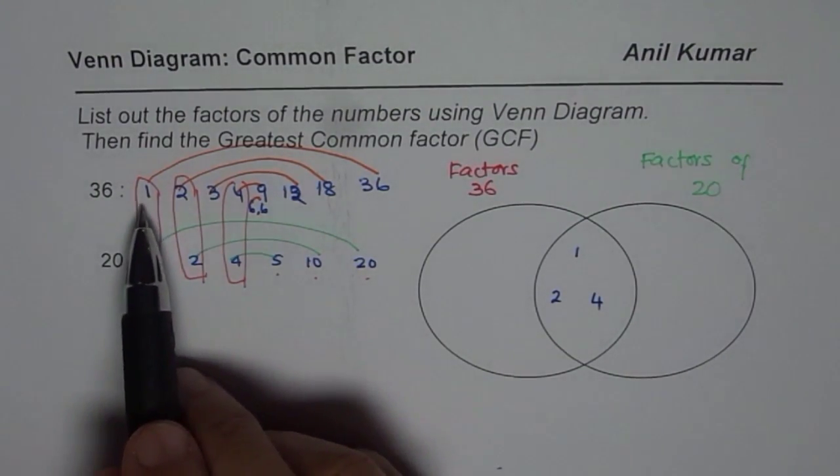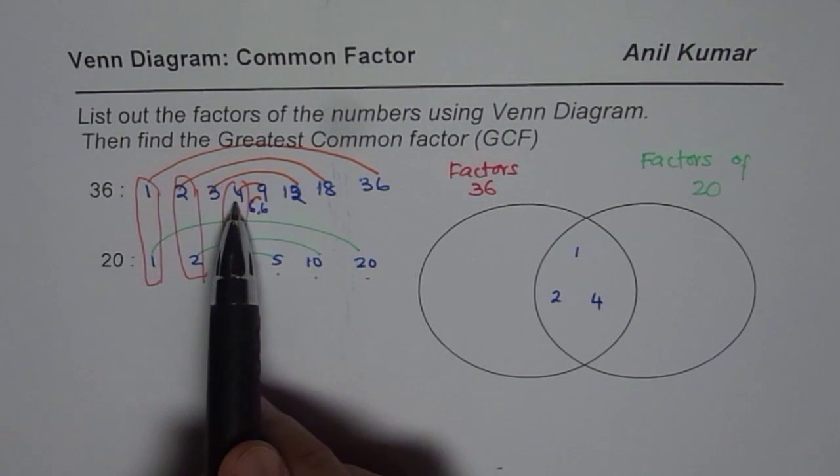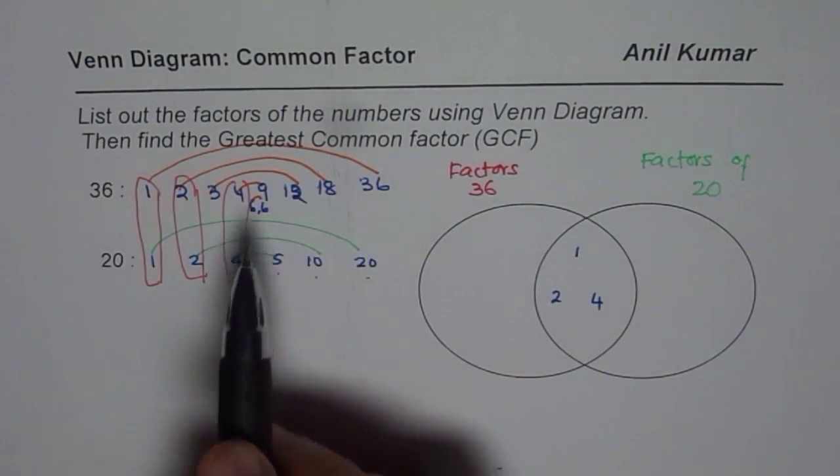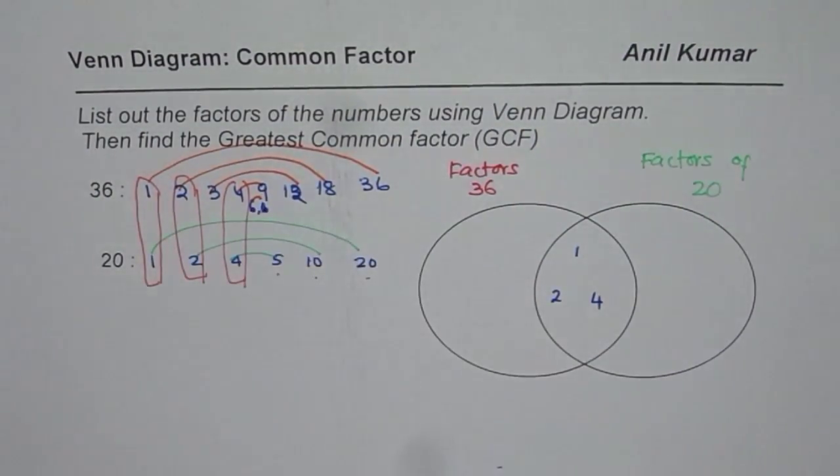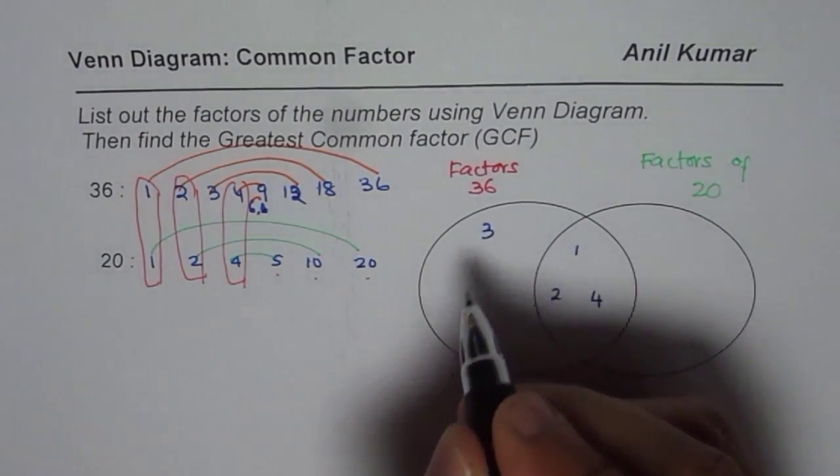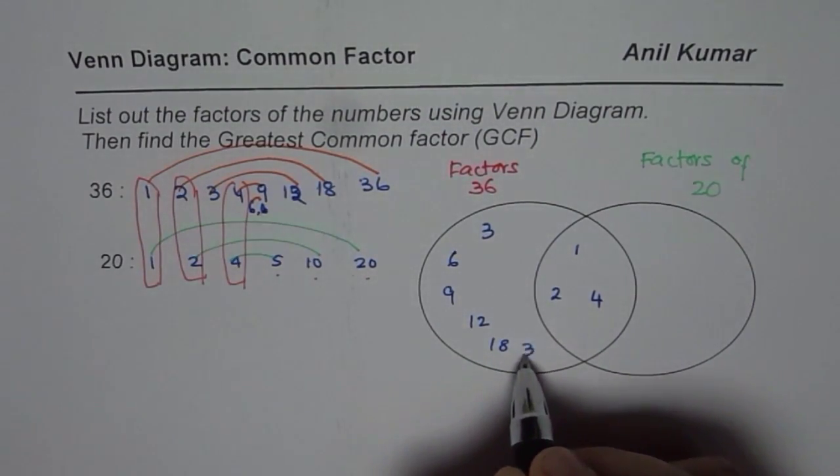Now start with the factors of 36. We have already considered 1, 2, and 4. We are left with 3, 6, 9, 12, 18, 36. There is no need to write two 6s, one is the same, right? Okay. Let us write down these numbers: 3, 6, 9, 12, 18, and 36.